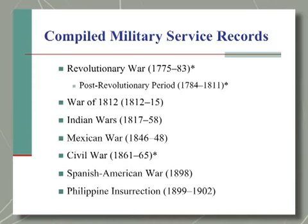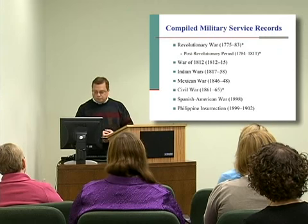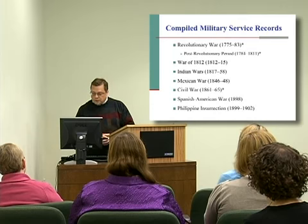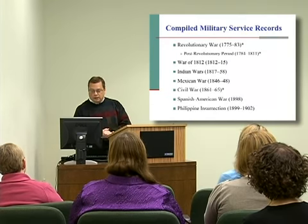They started originally for Union veterans to document their service in terms of verifying it for pension benefits. Afterwards, they went back and documented volunteer soldiers for other wars as well, going back to the Revolutionary War. The records were extracted from original records kept at the time those wars took place, including muster rolls, payrolls, unit returns, hospital records, prison records, and things of that nature. Thousands of War Department clerks extracted specific information about individual soldiers from these records, copied it onto individual cards, and those cards became that soldier's compiled service record.